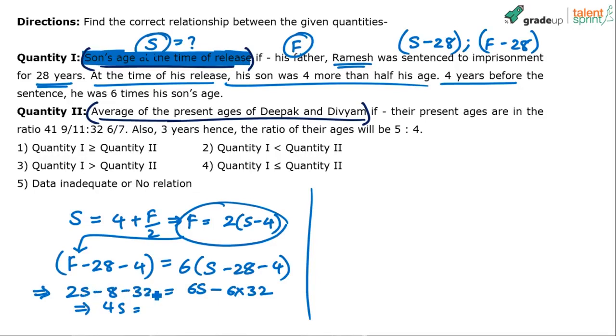So 4S equals 152, which means S equals 38. The son's age is 38. So Quantity 1 is 38. Remember, Quantity 1 is 38.